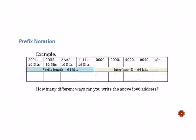Let's talk about prefix notation. Notice the example we've given here of 2001 colon 0DB8 colon AAAA colon 1111 colon and then all zeros. This first section, these first four sets of hextets are considered prefix linked.